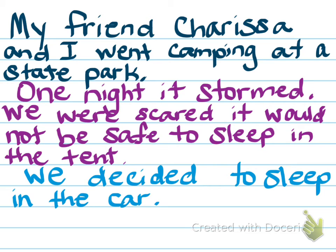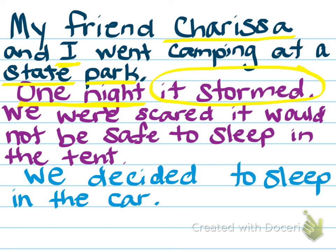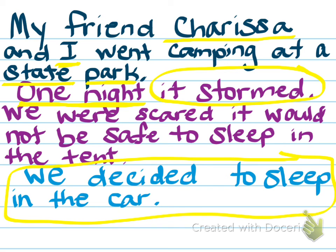And that is my story. My personal narrative has everything. I'm going to switch colors one more time to check and make sure I have everything I need. I need characters — my friend Charissa and I, there they are. Setting — my friend Charissa and I went camping at a state park, and also one night, so it was at nighttime. The problem I have is that it stormed and we were scared that we would not be able to sleep in the tents — we didn't think it would be safe. And the solution was, instead of sleeping in the tents, we decided to sleep in the car, which solved the problem because it was safer in the car than in the tents.